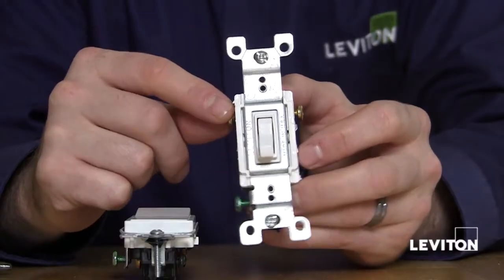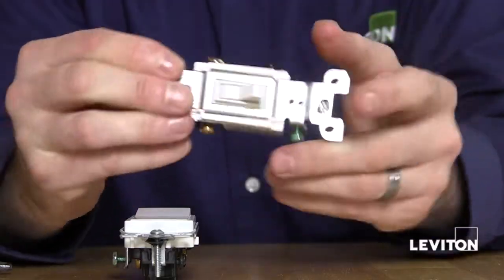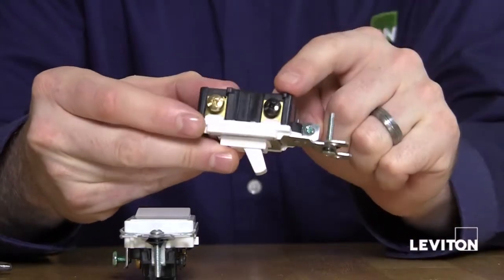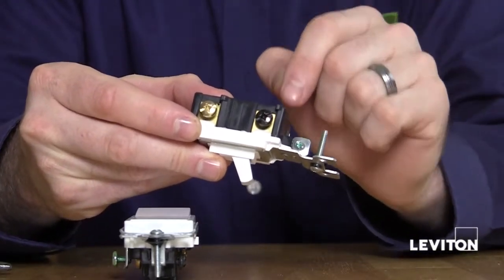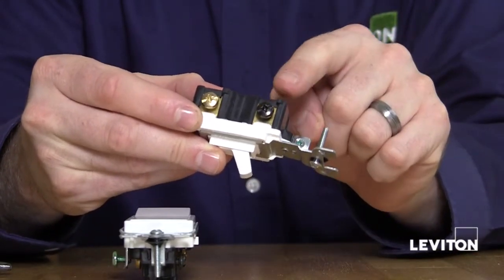It's called a three-way switch because it has three terminals. The black screw is for your line or your power wire or your load wire, which is the wire that goes to your light.